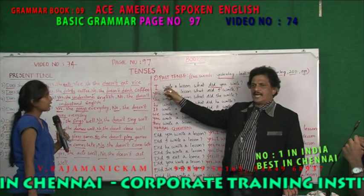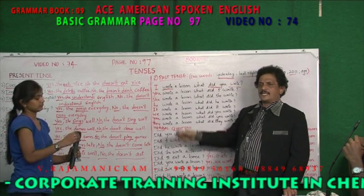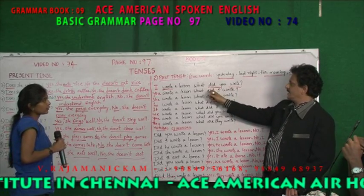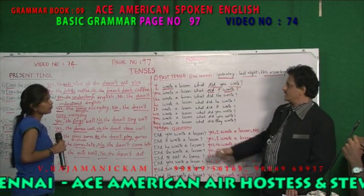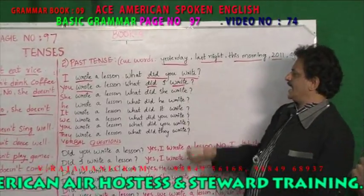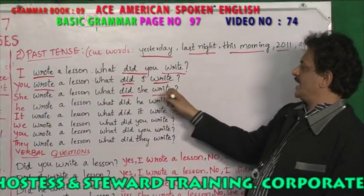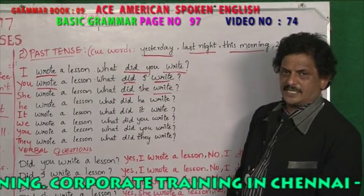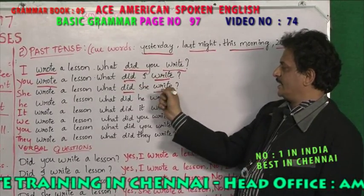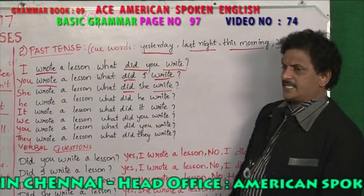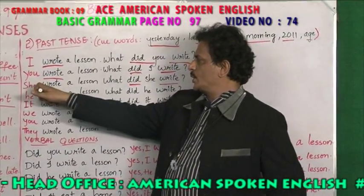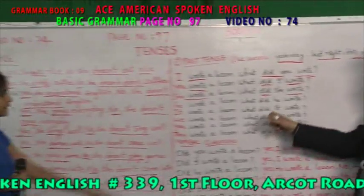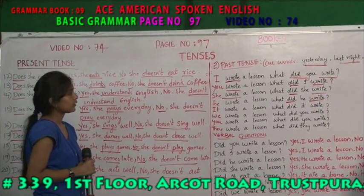Whenever you see these time-word adverbs, it is past tense. For example: what did you write? In present tense it's 'what do you write.' In past tense it's 'what did you write.' What will you write is future. When you ask in past tense, your reply should be in past tense. The answer: I wrote a lesson — wrote is past tense.